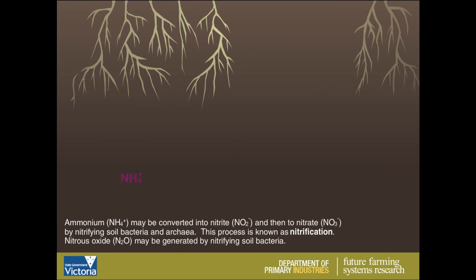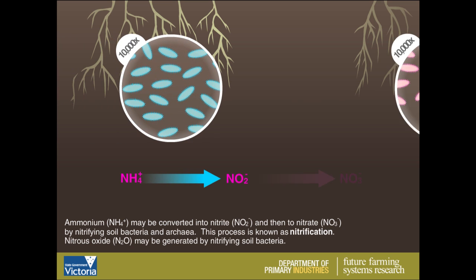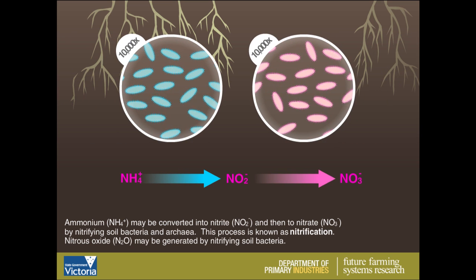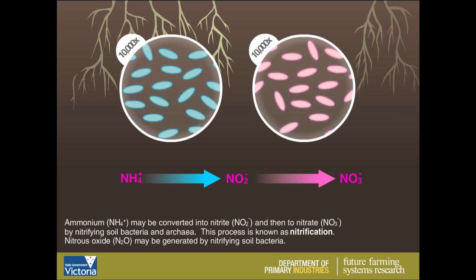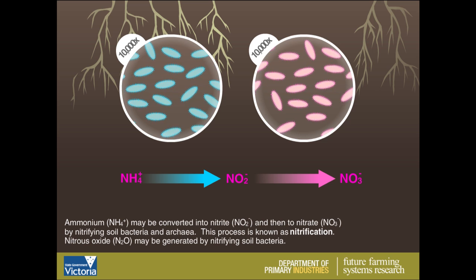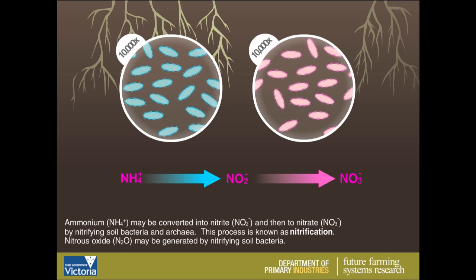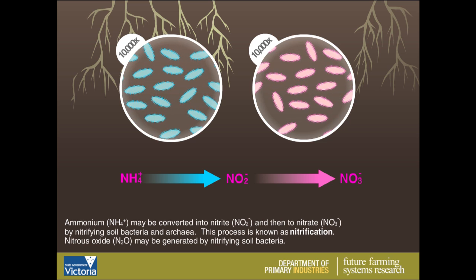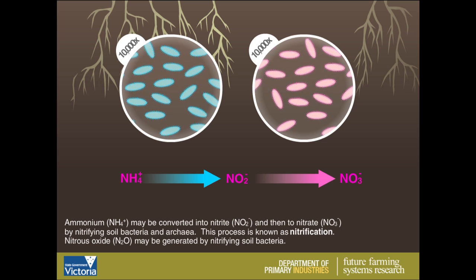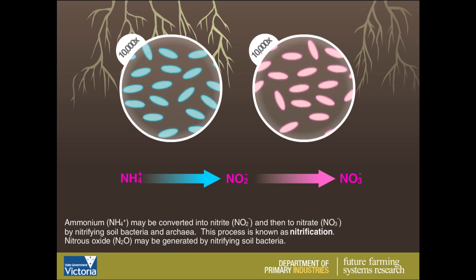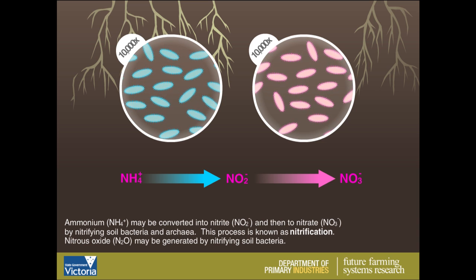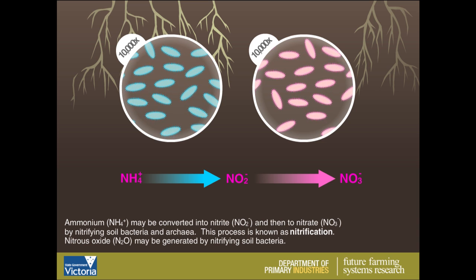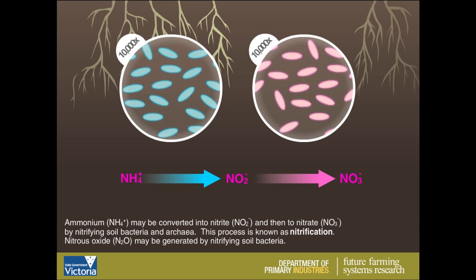Ammonium may be converted into nitrite and then to nitrate by nitrifying soil bacteria and archaea. This process is known as nitrification. Nitrous oxide may also be generated by nitrifying soil bacteria.